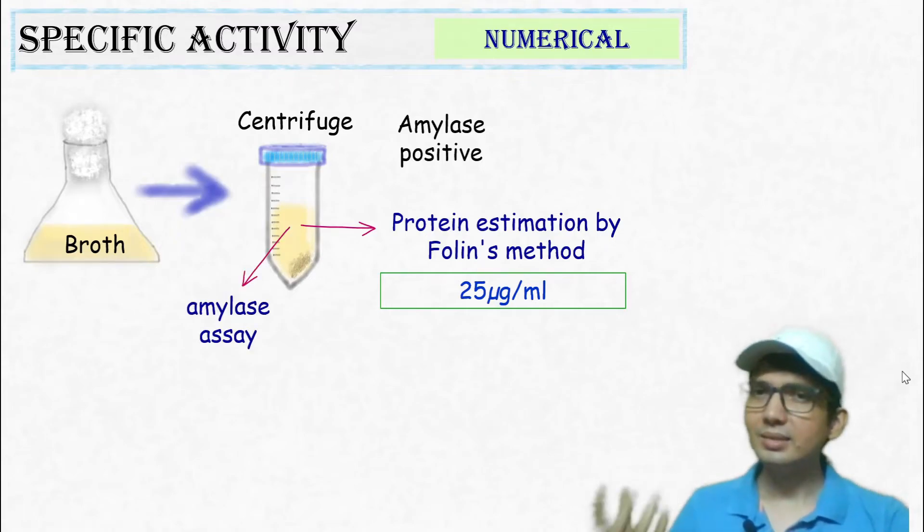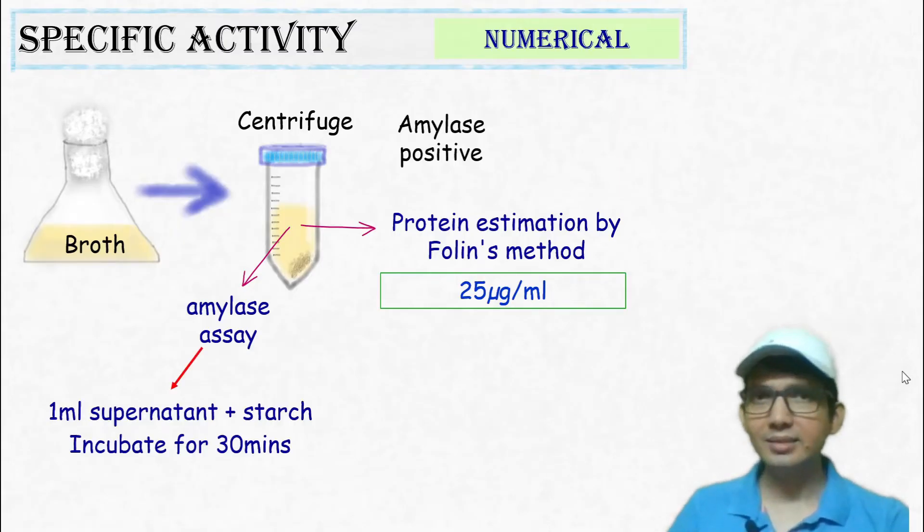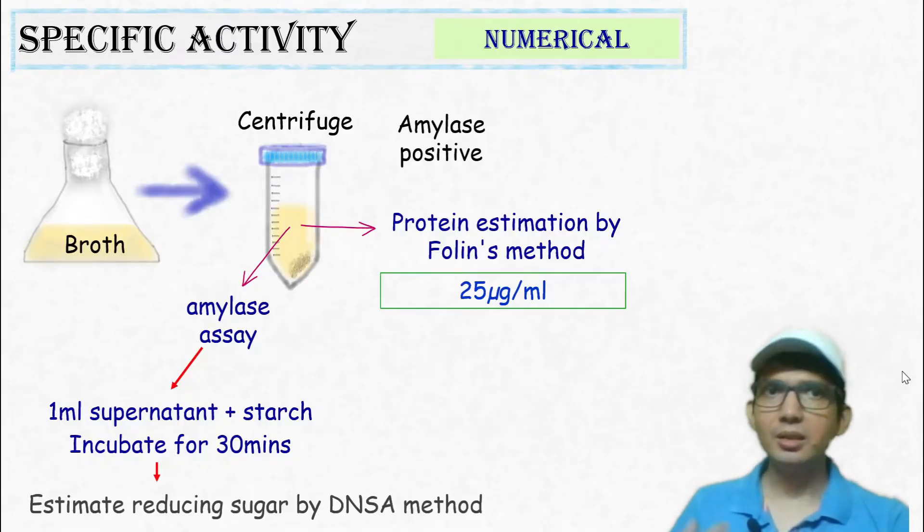Since the same supernatant also has the enzyme amylase, we can use this supernatant for amylase assay. Let's say 1 ml of supernatant was mixed with starch and incubated at 37 degrees Celsius for 30 minutes. After incubation, the reducing sugar was estimated by the DNSA method. Let's say the reducing sugar estimated was 10 micromoles.